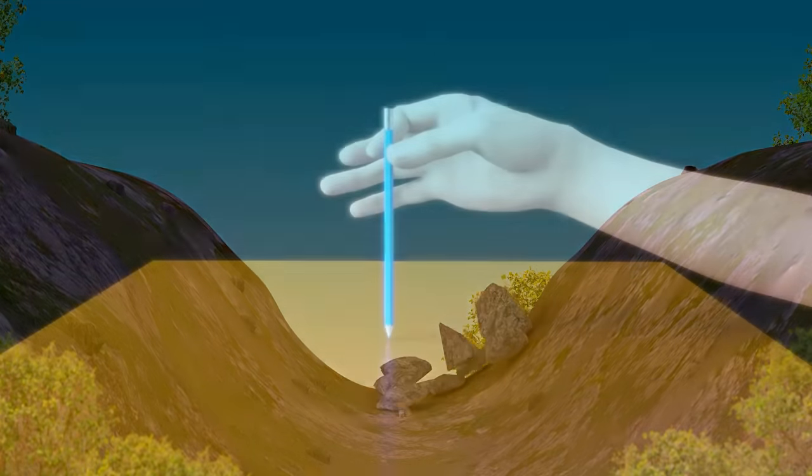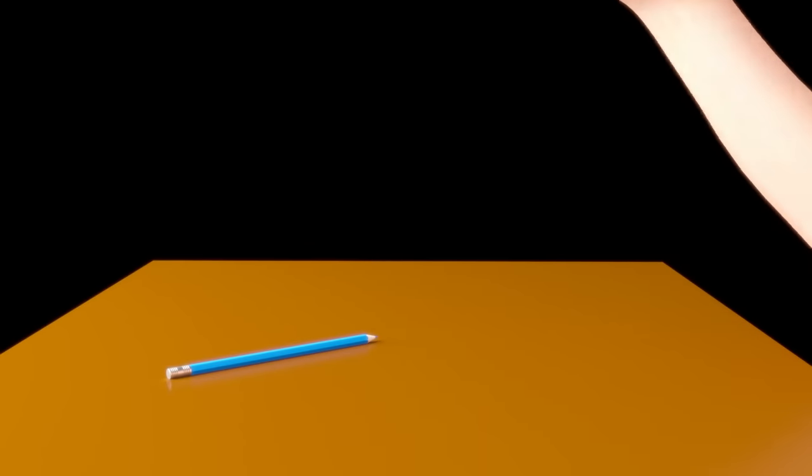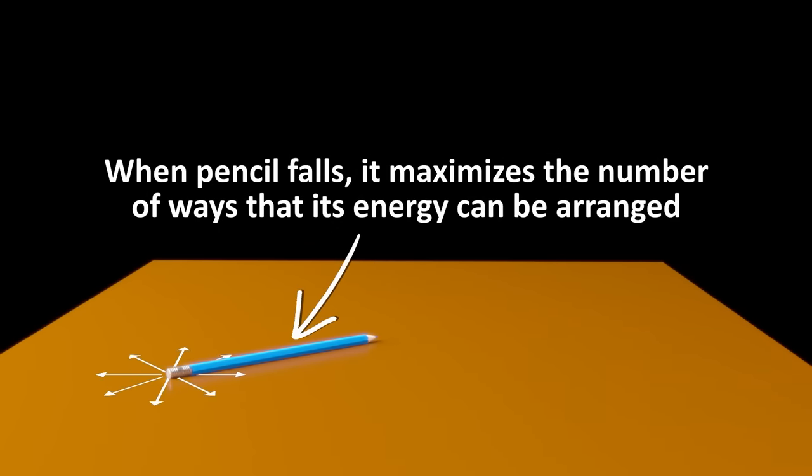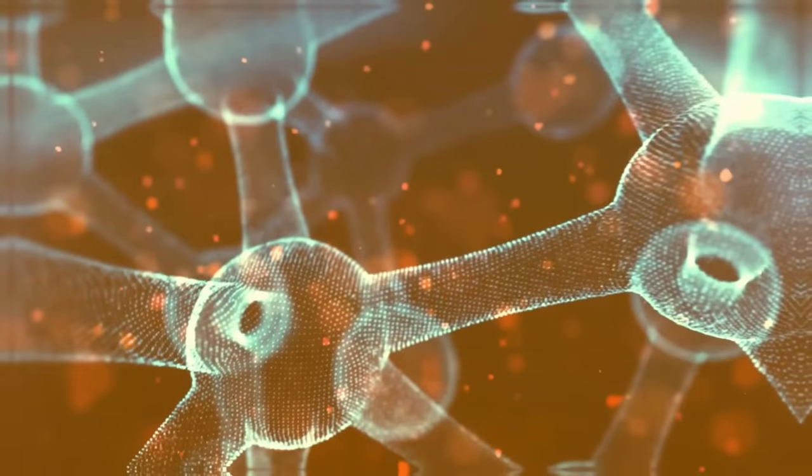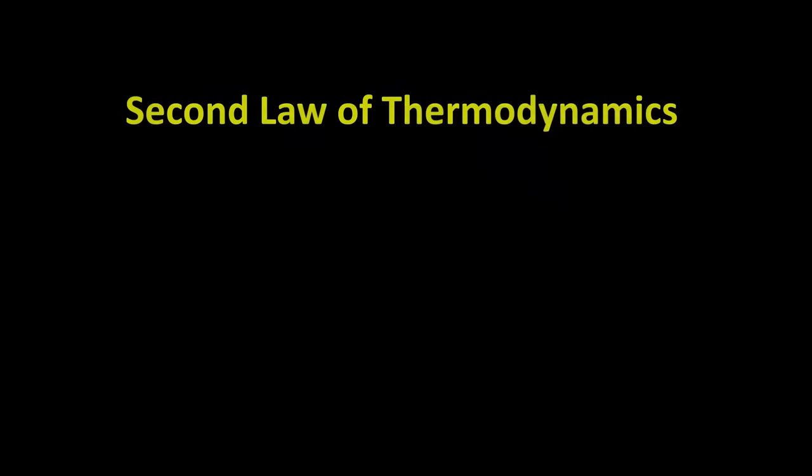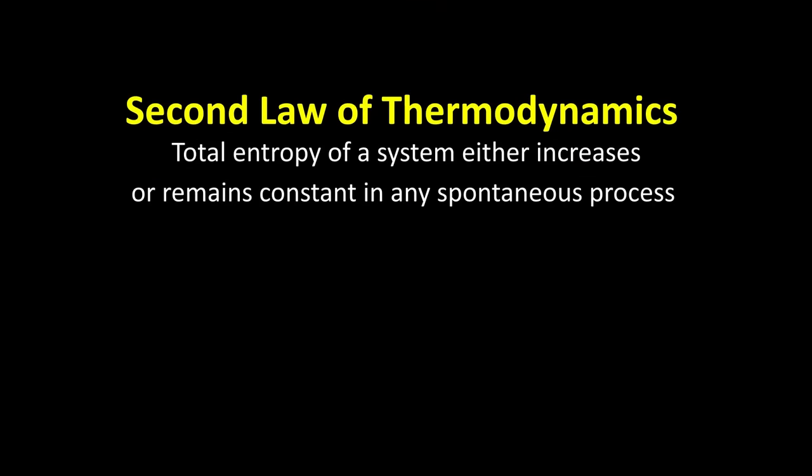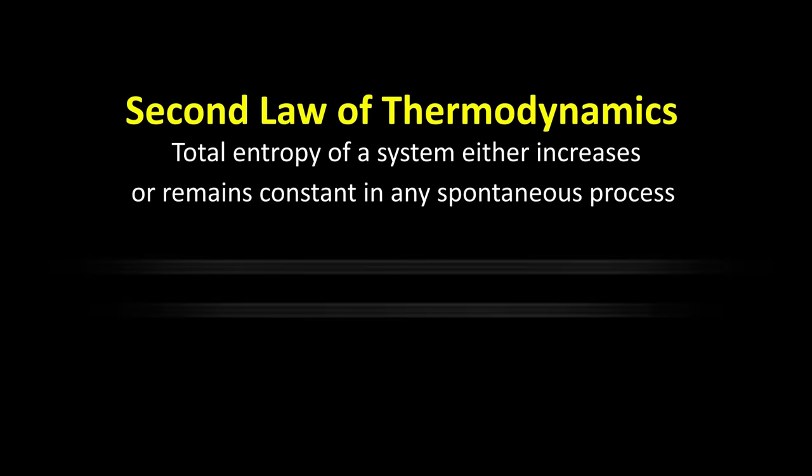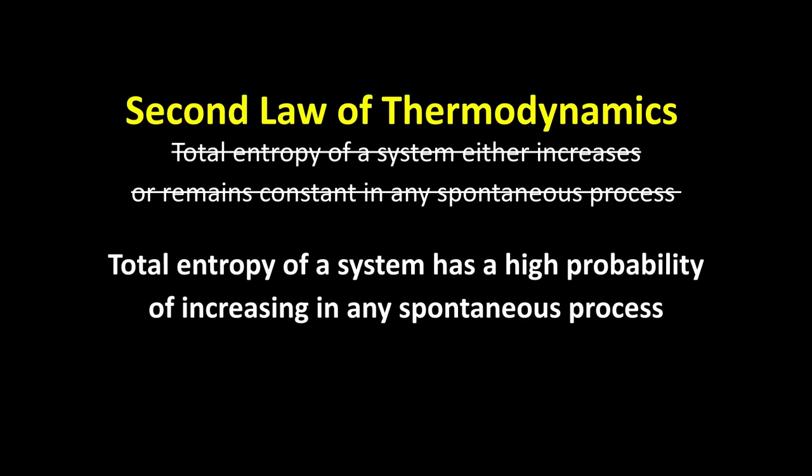So in the case of the pencil, it always falls to the table because that results in the total energy of the system dividing itself up to maximize the number of ways it can be arranged. So the law of entropy, that is the law that says entropy always increases, might be better written as, there is a high probability that the entropy always increases. It is not governed by physics, but by probabilities.